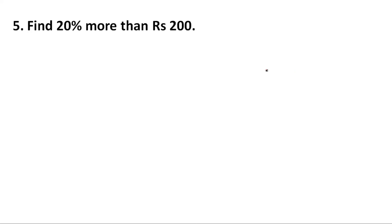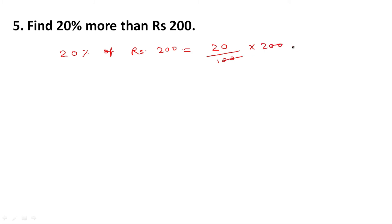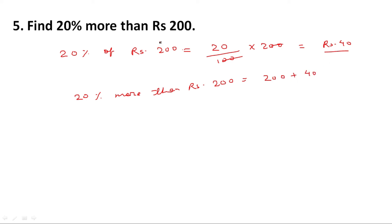Next question: find 20 percent more than rupees 200. First we calculate 20 percent of rupees 200, which equals 20 divided by 100 multiplied by 200, giving rupees 40. Since it is 20 percent more, we add: 200 plus 40 equals rupees 240.